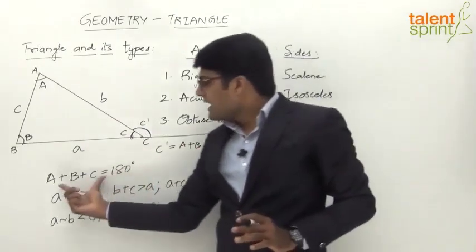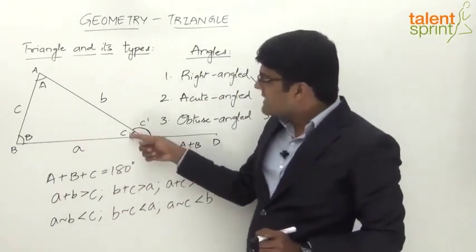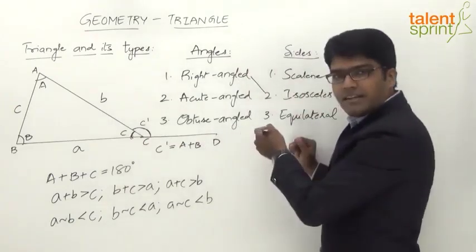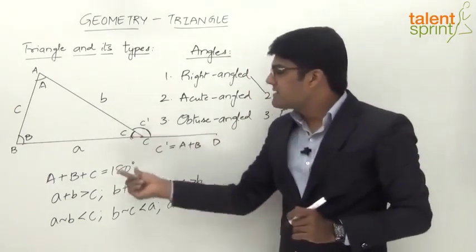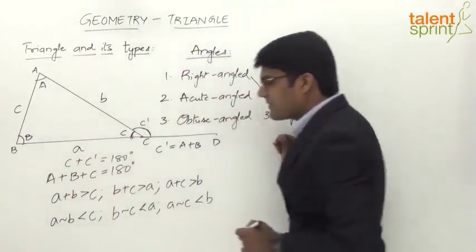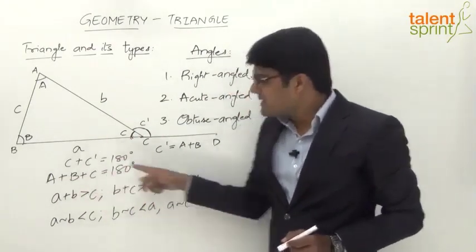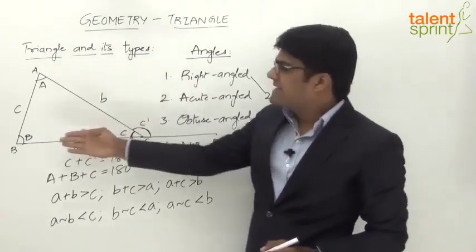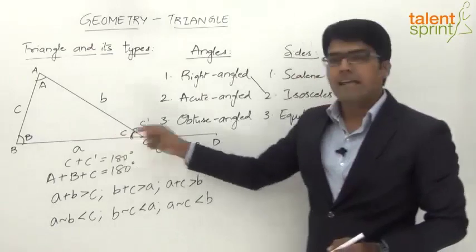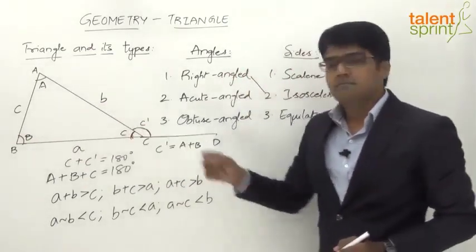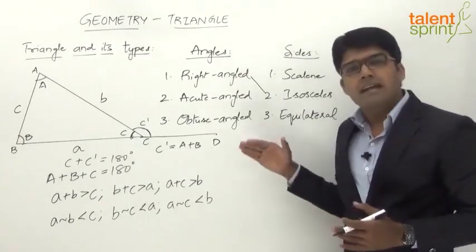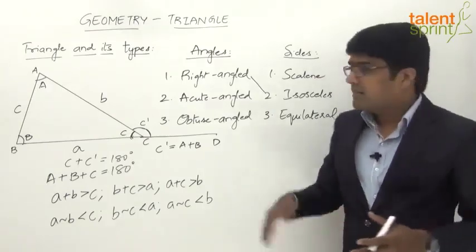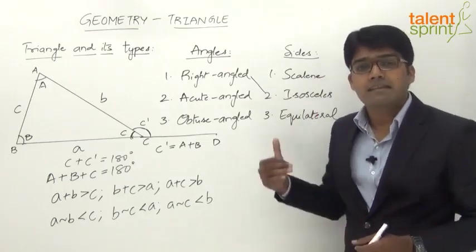This is easy to prove. We know A plus B plus C equals 180 degrees. Also, the interior angle C and exterior angle C dash form a straight line, so C plus C dash equals 180 degrees. From these two equations, A plus B plus C equals C plus C dash, and cancelling C from both sides gives C dash equals A plus B. Similarly, exterior angle A dash equals B plus C, and exterior angle B dash equals A plus C. So the exterior angle at any vertex of a triangle equals the sum of the other two interior angles.